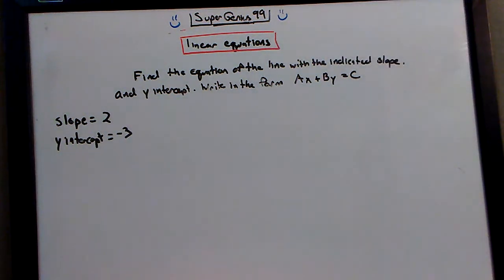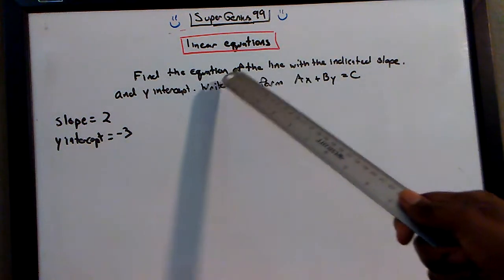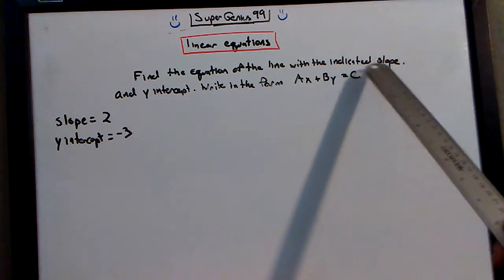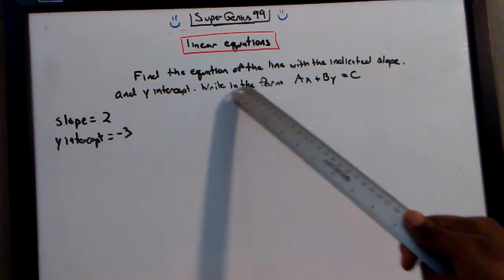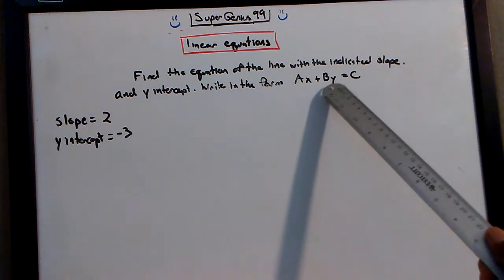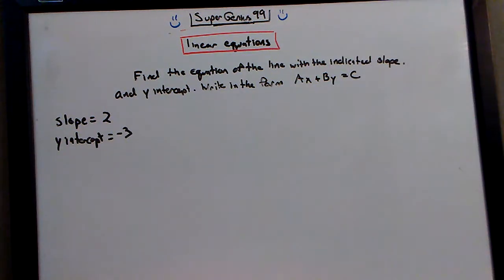We're dealing with linear equations today. So let's look at the problem. Find the equation of the line with the indicated slope and y-intercept, and write it in the form ax plus by equals c.